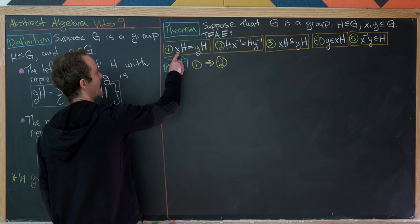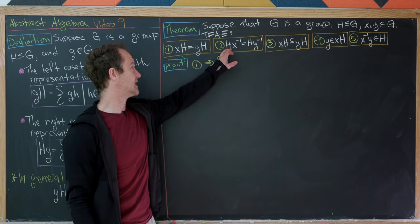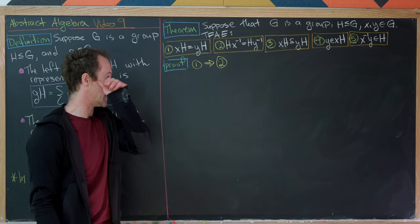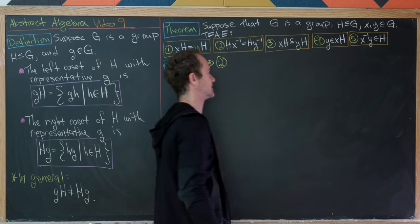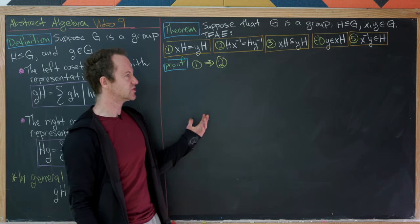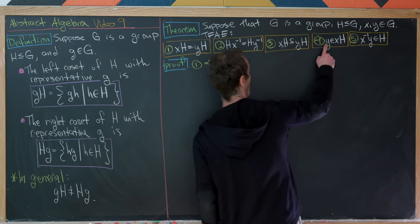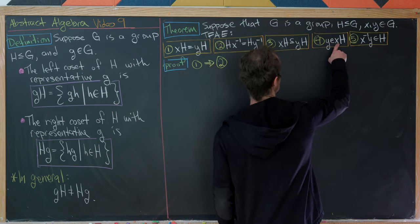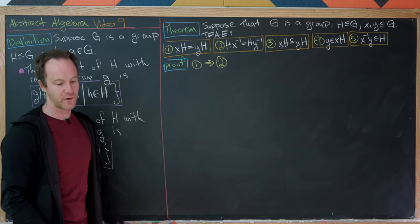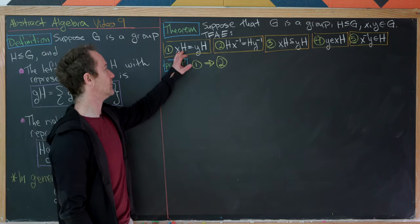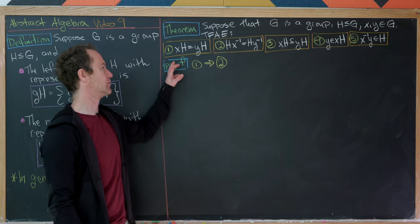Statement 1: the coset xH equals yH. Statement 2: the right coset Hx⁻¹ equals Hy⁻¹. Statement 3: xH is a subset of yH — notably, containment is equivalent to equality here. Statement 4: y is an element of the coset xH. Statement 5: x⁻¹y is an element of H. We'll prove this with a looping argument: 1→2, 2→3, 3→4, 4→5, and 5→1.